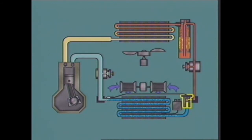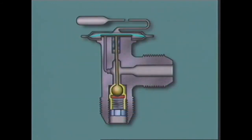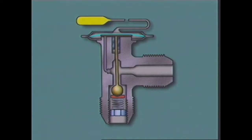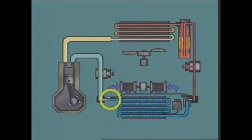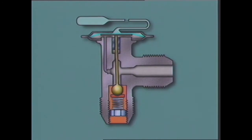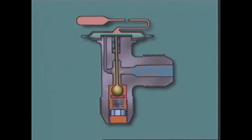At the TX valve, the amount of liquid refrigerant flow is determined by a spring-loaded valve controlled by different pressures on each side of a connecting diaphragm. The pressure in chamber A is determined by a temperature-sensing bulb taped to the evaporator outlet and insulated from air temperatures. The sensing bulb is filled with refrigerant and connected to chamber A by a capillary tube. Higher temperatures give higher pressures, tending to open the valve wider and allow more refrigerant to flow. Lower temperatures give lower pressures, tending to close the valve and reduce refrigerant flow.